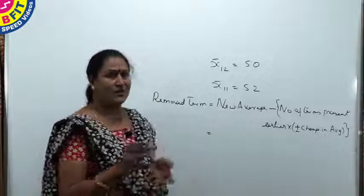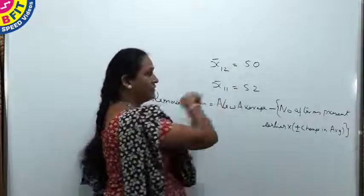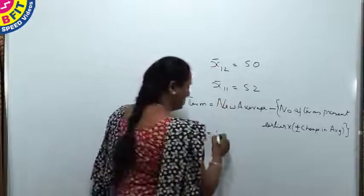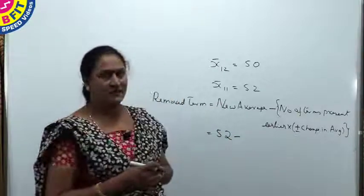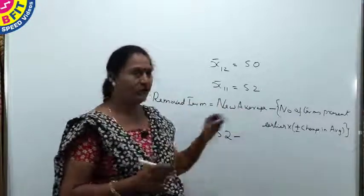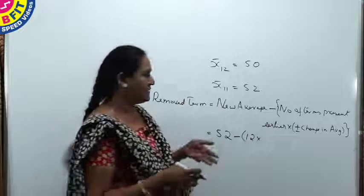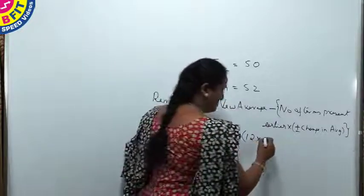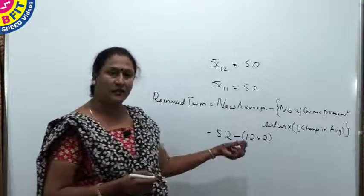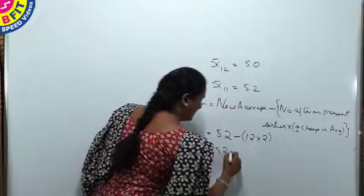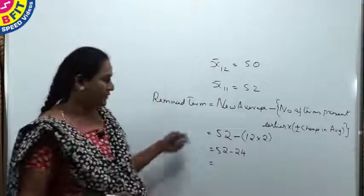Now we will apply this shortcut to find the removed term. The new average is the one we get for 11 terms, which is 52 — earlier it was 50, increased by 2. As we have removed one term, write minus. The number of terms present earlier was 12. The change in average is plus 2 since it increased. So the removed term is 52 minus (12 × 2), which equals 52 minus 24, giving the removed term as 28.